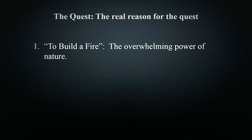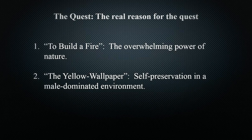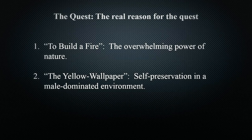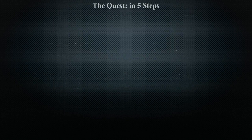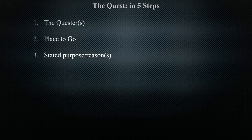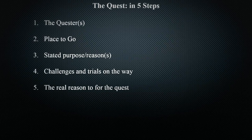Then we get the real reason for the quest. In To Build a Fire, it's the overwhelming power of nature — the character ignores all conventional wisdom about the world around him and suffers the consequences. His is a failed quest. In The Yellow Wallpaper, there is also a failed quest: self-preservation in a male-dominated society. The narrator, attempting to survive, is overly repressed by both her husband and her brother, who have decided the best way to cure her is to cut her off from civilization. She has no real power against it until she's gone completely mad.